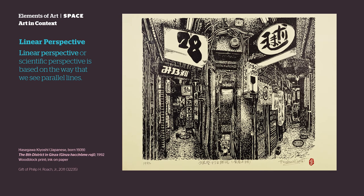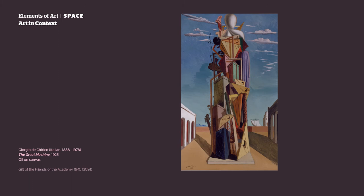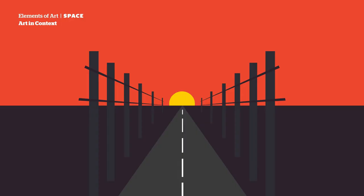Linear perspective, or scientific perspective, is based on the way that we see parallel lines. It tricks our eyes into seeing space within the flat picture plane surface. Slanting the horizontal lines of buildings and other objects in a picture makes them appear to extend back into space. If these lines are lengthened, they eventually meet at a point along an imaginary horizon line that represents the viewer's eye level. The point where lines meet is known as the vanishing point.